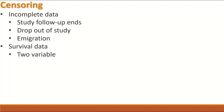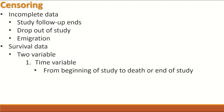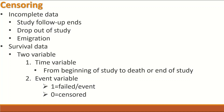For survival analysis, the data must have two essential variables. The first is the time variable, which is the time from the beginning of the study to death or the end of the study. The second is the event variable — such as death, cured from disease, or getting the disease — given a value of one for failed and zero for censored.